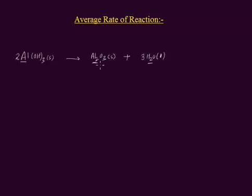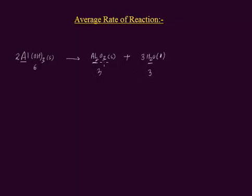Let us check if oxygen atoms are balanced. Aluminum hydroxide has six oxygen atoms. Aluminum oxide has three oxygen atoms and the water molecule also has three oxygen atoms — three plus three is equal to six. You can see oxygen atoms are balanced on both sides. This is a balanced equation.